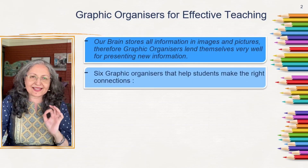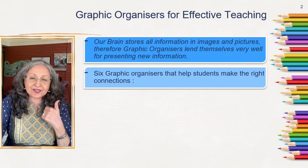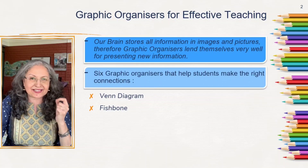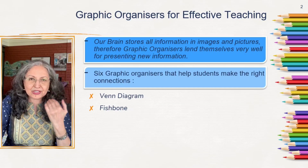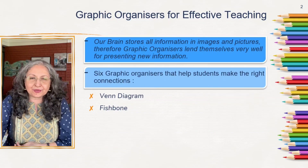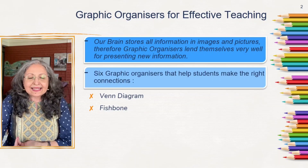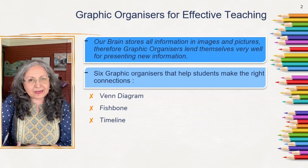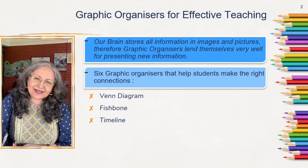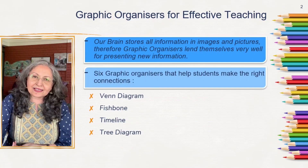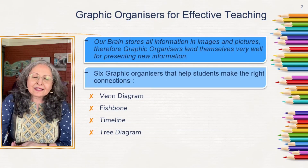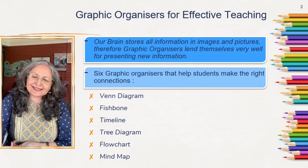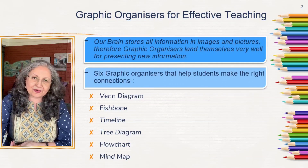At Shikshangan, we're recommending the top six graphic organizers that every teacher must master. The first is the Venn diagram. The next is a fishbone diagram, also known as an Ishikawa or cause-and-effect diagram. In each episode we will take up one of them, with examples from the syllabus. We'll also cover a timeline — a chronological mapping of events useful across many subjects, not just history — the tree diagram (also known as a hierarchy or classification chart), the flowchart, and the mind map.